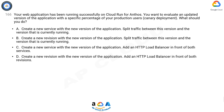C. Create a new service with the new version of the application. Add an HTTP load balancer in front of both services. D. Create a new revision with the new version of the application. Add an HTTP load balancer in front of both revisions.